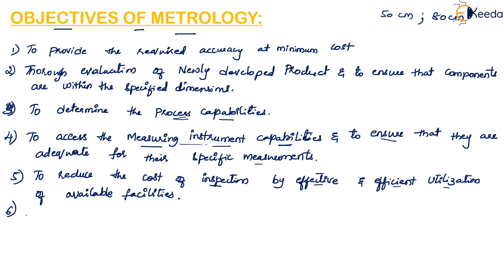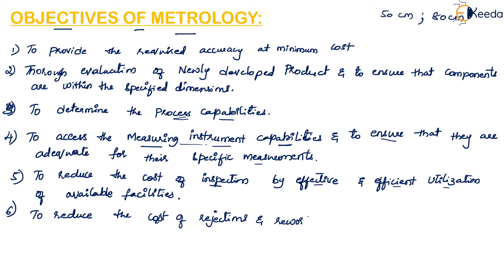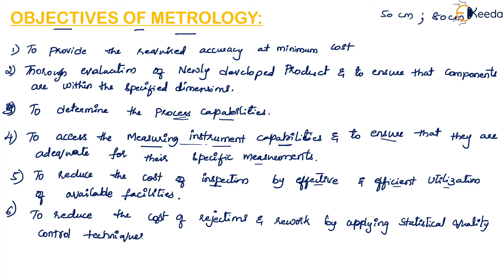Another objective is to reduce the cost of rejection and rework by applying statistical quality control (SQC) techniques. If a product is made accurately according to specifications from the start, there may be no rework or rejection required at all. Metrology helps reduce this rework and rejection by applying SQC techniques.